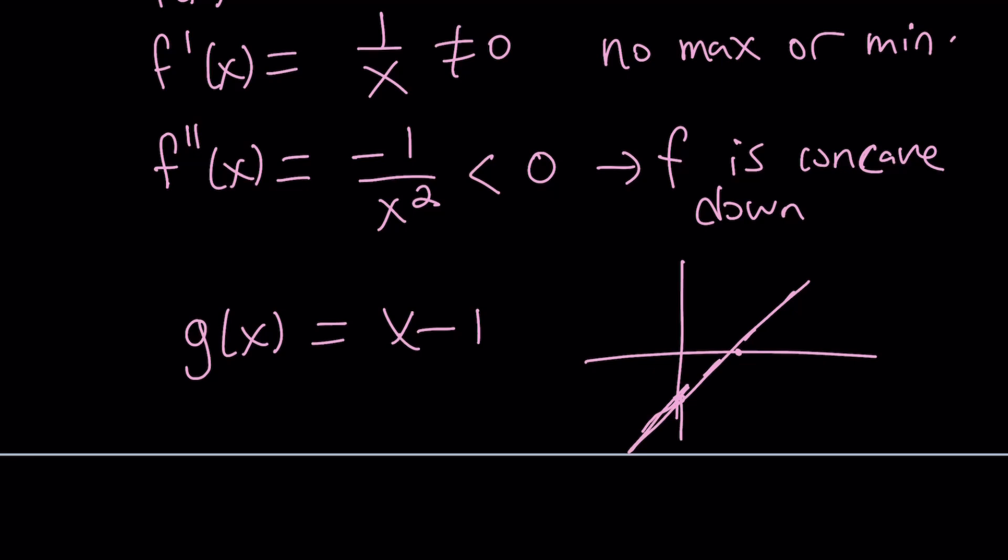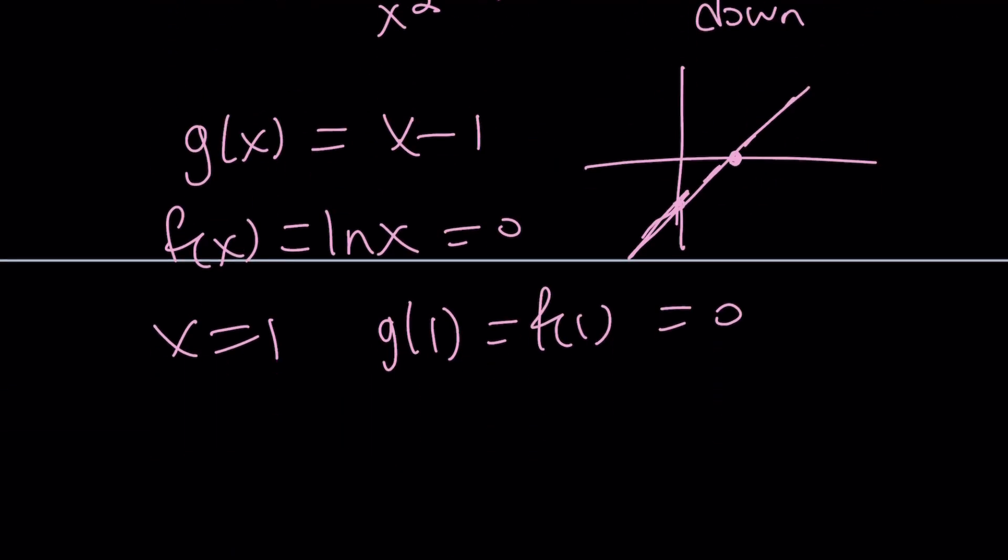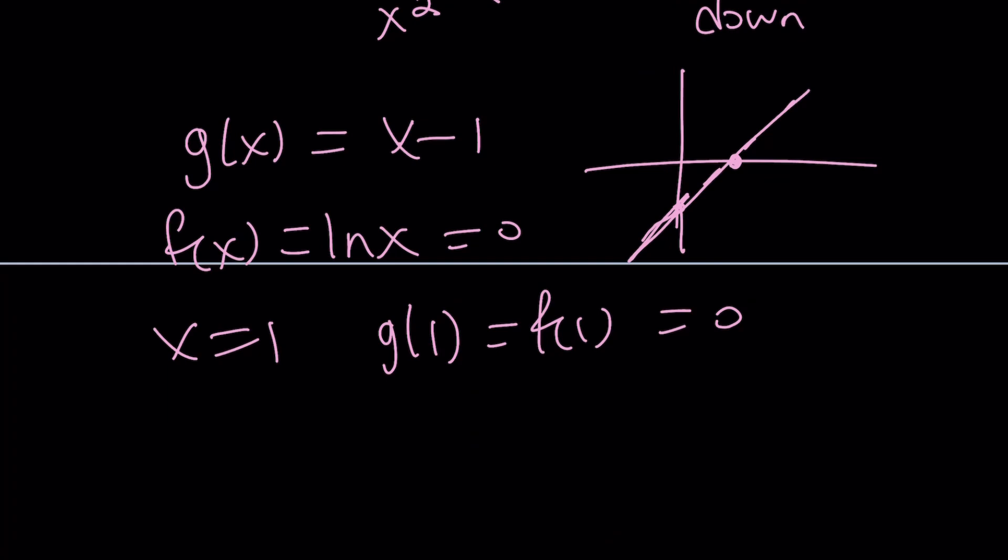So our ln function, if you set f of x equal to 0, you're also going to get x equals 1. Interesting. g of 1 and f of 1 are equal, because they're both equal to 0, which means there seems to be an intersection point. Of course, we already found it. But is that the only intersection point? That's a good question.